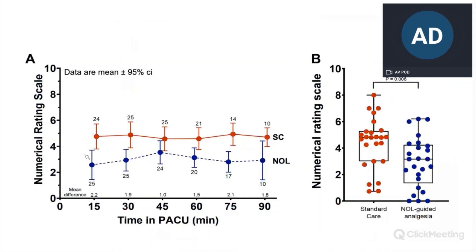The NOL-guided data is shown in red, the standard clinical care in blue. On average, there was about a 1.6-point difference in pain scores — a highly significant difference. The occurrence of severe pain, meaning pain scores of six or greater, was also less in the NOL-guided group compared to standard clinical care. On the right side, the average pain scores in the recovery room over time between the two groups show the two groups differ by about 1.6 pain points — a highly significant difference.